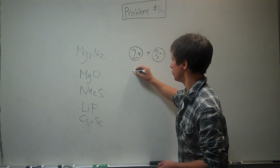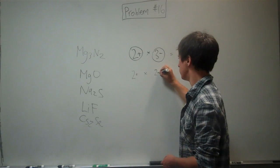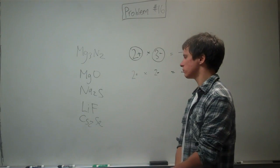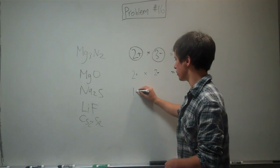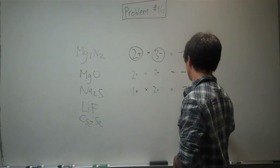So this one is 2 positive times 2 negative is negative 4. Sodium is 1 positive times 2 negative equals negative 2.